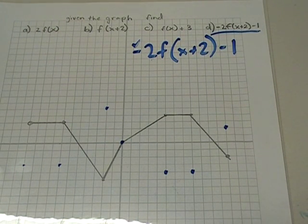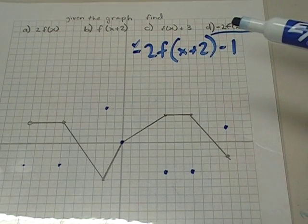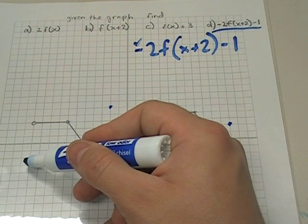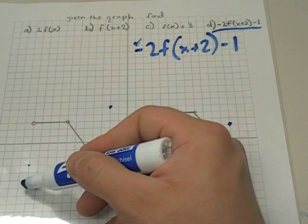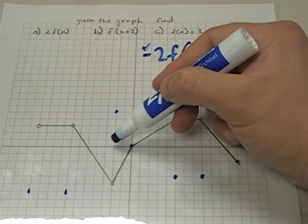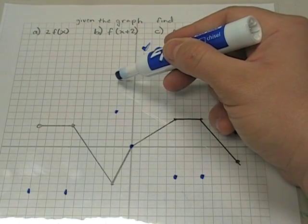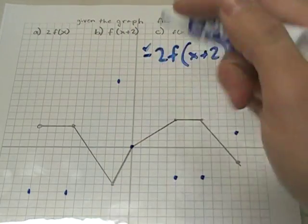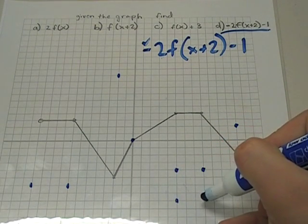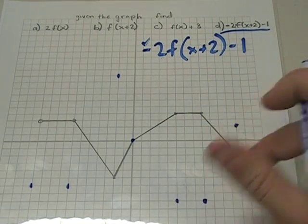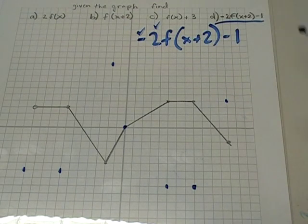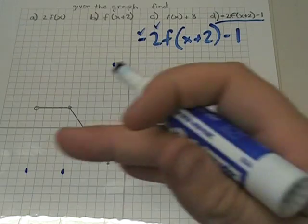Now the second step is to multiply all of the y values by two — stretch the y values. The y value here in blue is at negative three, so the new y value should be at negative six. This y value is at five, the new y value should be at ten. This y value is at zero — it remains at zero. These y values are at negative four through eight — we move those to negative eight. And this y value was at two, we move it to four. So now we have done our vertical stretch — we've flipped this graph and stretched it vertically.